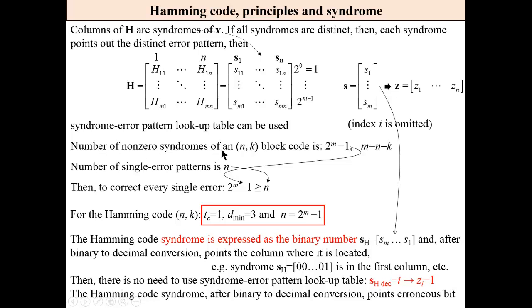Now, number of non-zero syndromes in block code is 2 to the power of m minus 1, where m is number of check bits. Number of single errors in a code of the code word length n is n. Then, to correct every single error, number of syndromes should be equal or greater than number of single error patterns. For Hamming code, this is equality: n equals 2 to the power of m minus 1. This code has a minimum distance of 3, which enables correction of every single error.